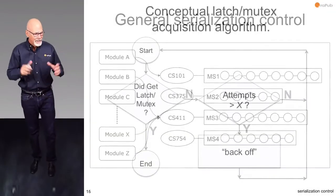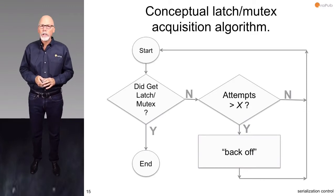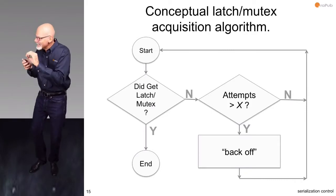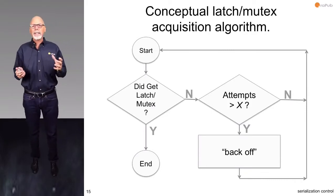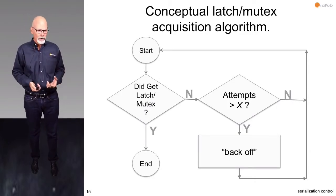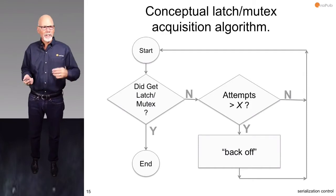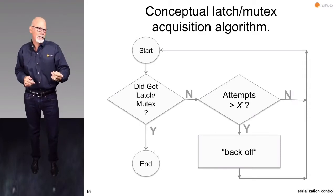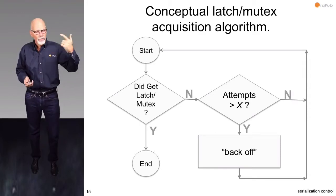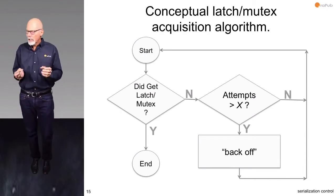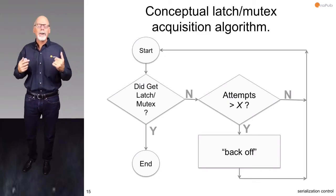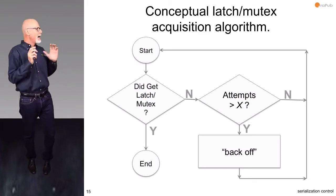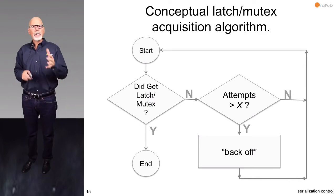This is a key slide. The algorithm has basically two main components: first, attempting to get the latch with a single request, and second, if you don't get the latch, you try again — that's called spinning. Repeated attempts to try to get the latch, and at a certain point coded into Oracle, it says this is not working and backs off. There's spinning and there's the back-off, and this applies to both latches and mutexes, though implemented differently.